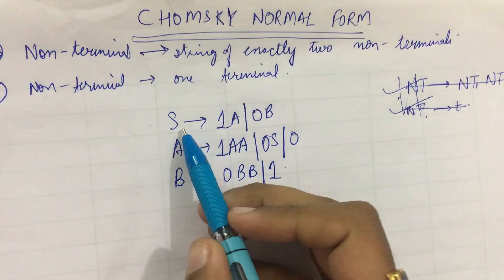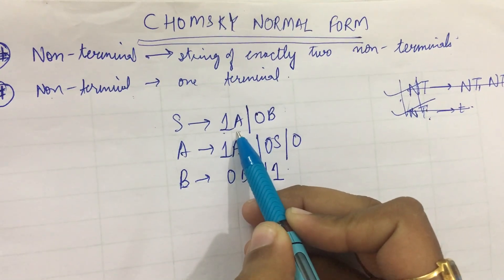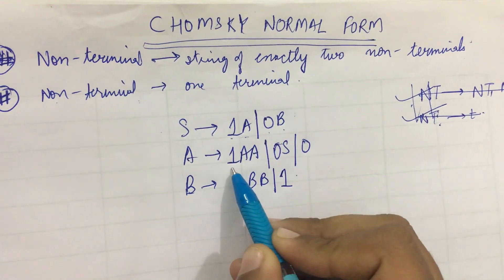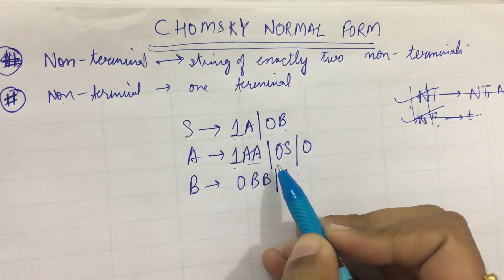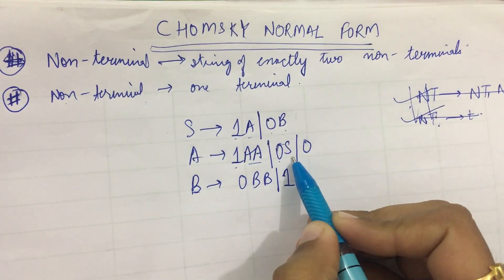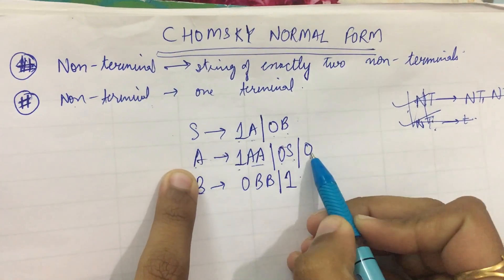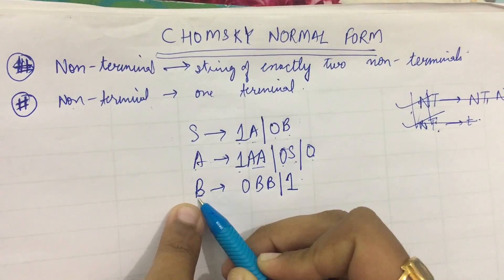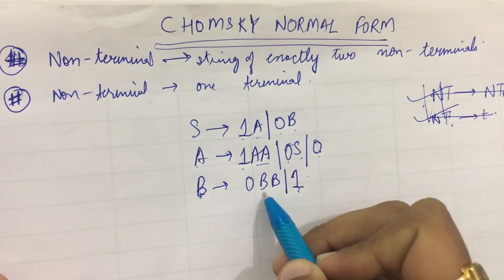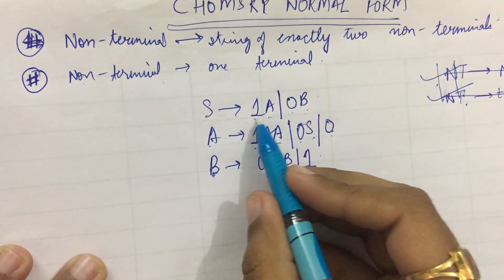Looking at these production rules: some have one terminal and another non-terminal, or one terminal and two non-terminals — these four are not in CNF. But a non-terminal leading to a single terminal is in CNF, and similarly a non-terminal leading to a terminal is in CNF. So we need to convert the rest into CNF by substitution.